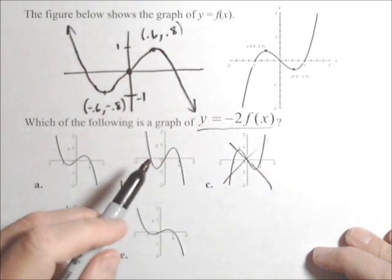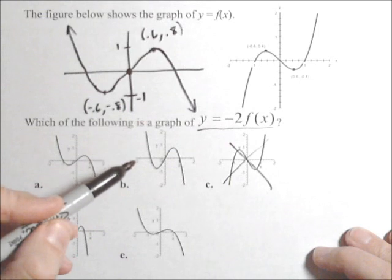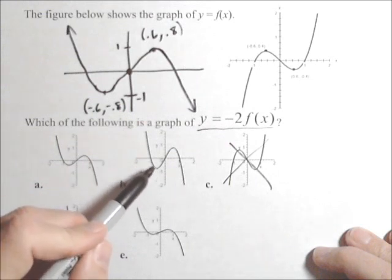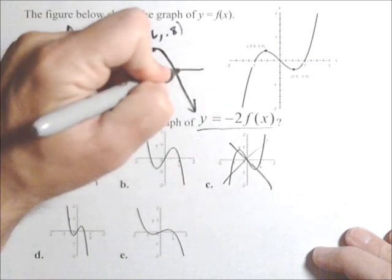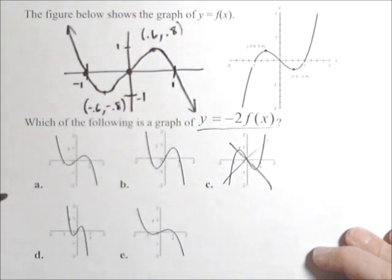But now we're going to check to see which of them looks like it's also been stretched. They should have the same zeros. This should still hit at -1 and this should hit at 1. There was no vertical shift, so it won't go up or down. So we need to have the same zeros, so this one is out.